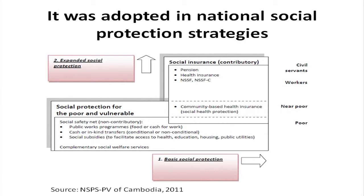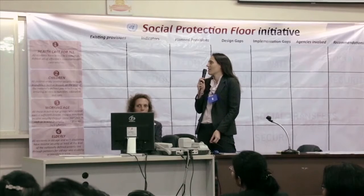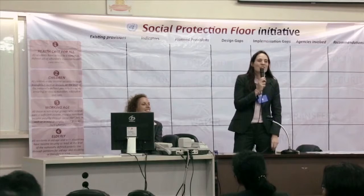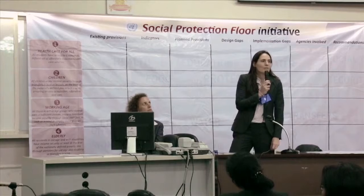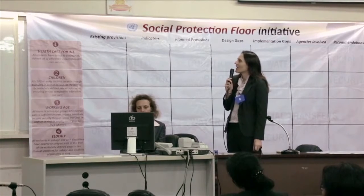Countries like Cambodia were already discussing the idea of a minimum guarantee for all. Cambodia's National Social Protection Strategy has a clear reference to providing universal coverage to all, though it targets the most vulnerable. More recently, at the International Labour Conference in June 2012, the Recommendation on Social Protection Floors was discussed and unanimously adopted — with only one abstention — a very rare case in ILO history, reaffirming commitment to extending social protection coverage.